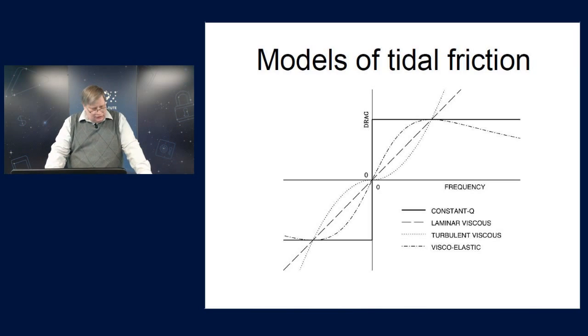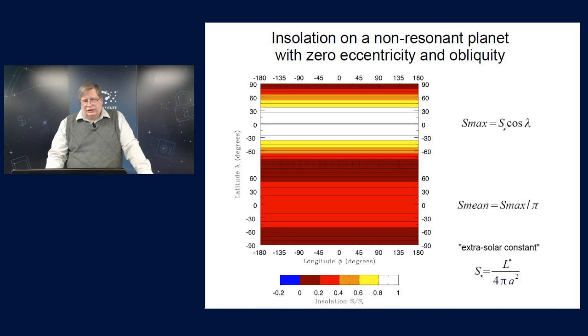Like the synchronous resonance, for example, is one of them. But there are other resonances that occur when the orbit is eccentric. Let's look at the case where the eccentricity is zero. Here's a planet which is not in any kind of a resonance. So it's spinning independently of its orbital motion. And it's also got zero eccentricity or obliquity.